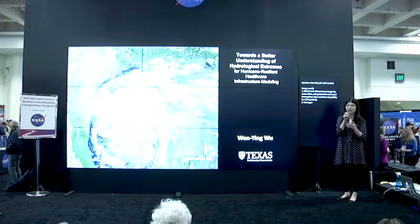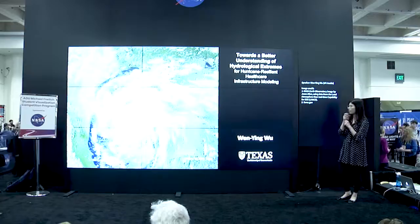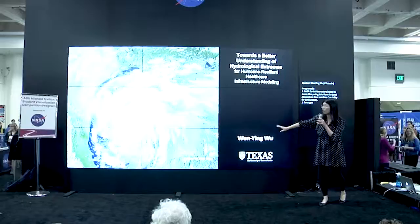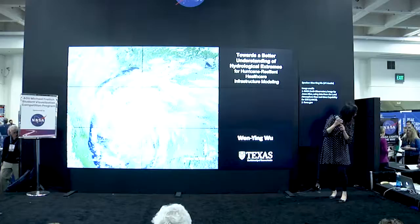Basically, it is about how to optimize the resources for hospital evacuation during flooding events. Here you can see the NASA satellite image — it is a multi-image — and you can see Hurricane Harvey and how dramatic it is in the Texas Gulf region.